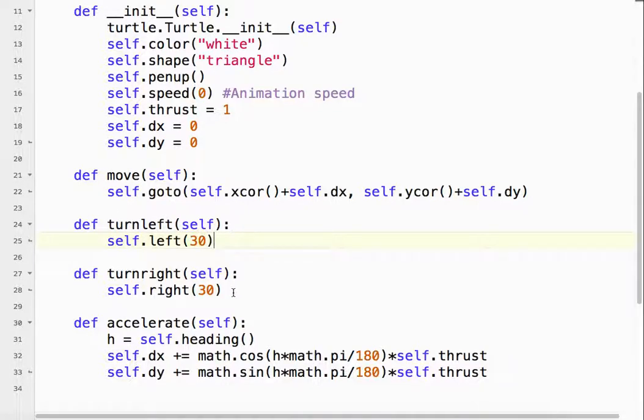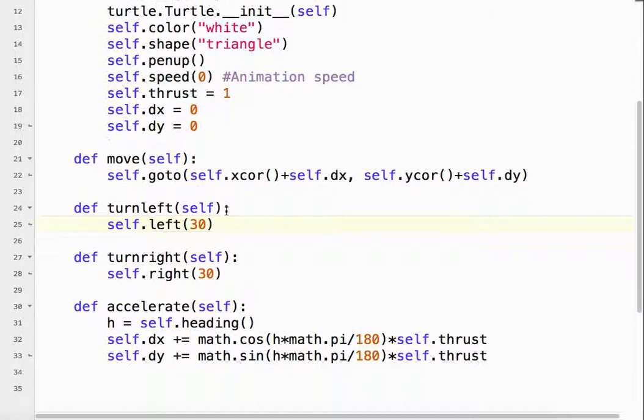Turning left is the same as before. We just basically rotate. Okay? But because rotation doesn't change our dx, it doesn't change our dy, the spaceship keeps moving in whatever direction it was already moving in.